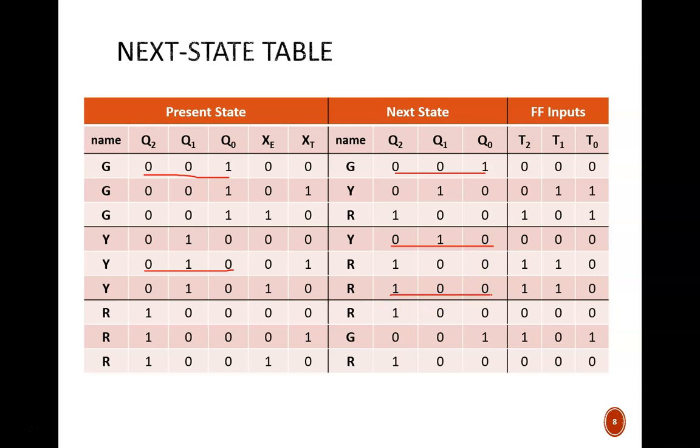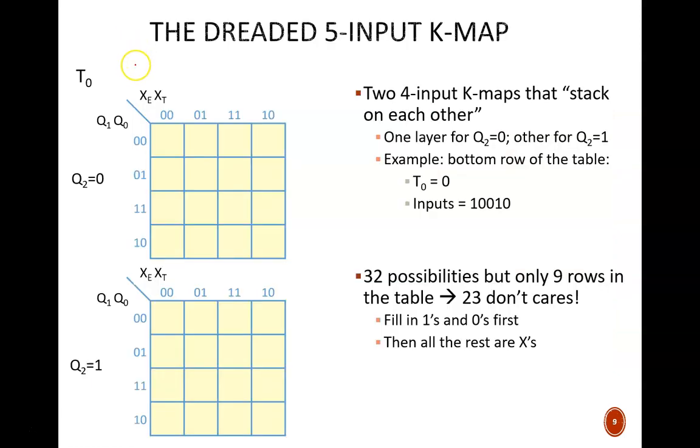Warning, what you are about to see may shock you. We have five present state columns, which means we need to use five input Carnot maps. We have not seen this yet in the course. I have purposefully limited problems to four inputs, but now it's time to venture beyond our comfort zone. It may look like these are two separate K-maps, but they are actually two layers of the same K-map used to find the equation for T0. The top half is for the cases where Q2 equals 0, and the other four inputs behave as you would expect on a four input map. The bottom half is the same, except it's for the cases where Q2 equals 1.